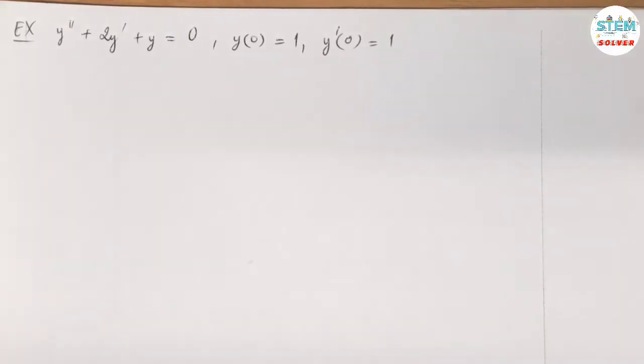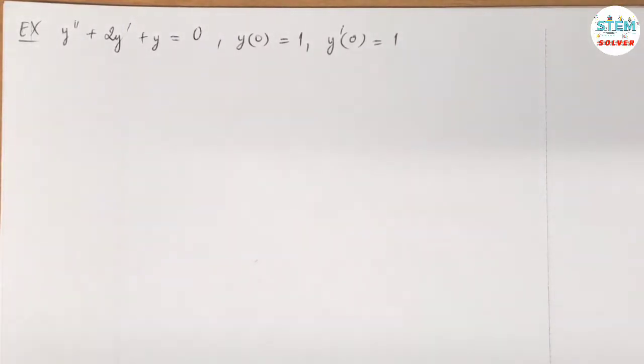Using the Laplace transform to solve the initial value problem y double prime plus 2y prime plus y equals 0. And you are given y of 0 equals 1, y prime of 0 equals 1.